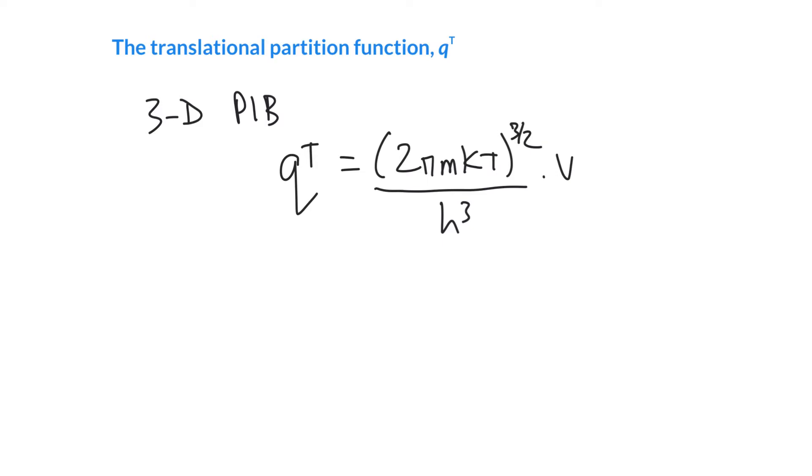I think it's interesting to look at the effect of temperature on the partition function. So we know that as the temperature rises, the partition function is going to go up. It's not going to go up linearly, but it's going to go up to the three halves power. And this is what we'd expect because as we have higher and higher temperatures, we have access to higher and higher states. And so if Q is a measure of the number of occupied states at a particular temperature, then we would expect it to increase with temperature.